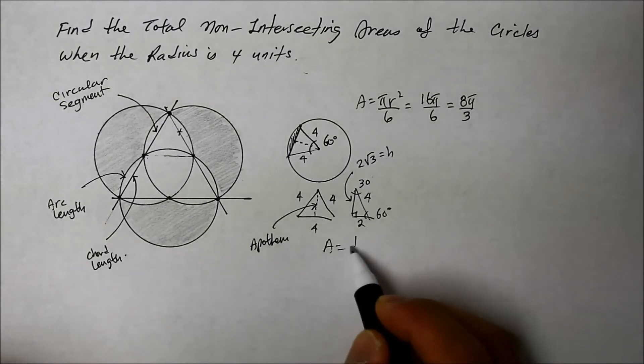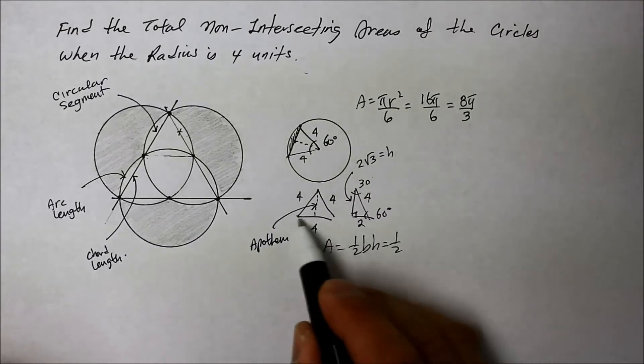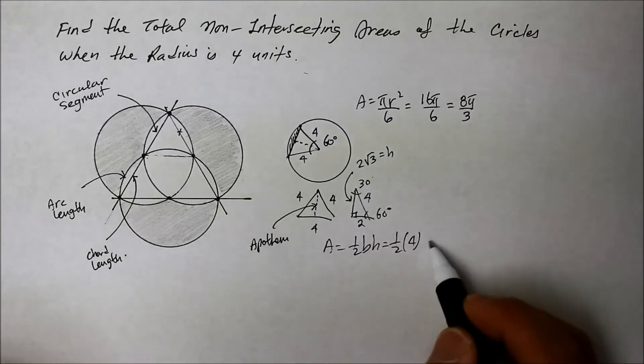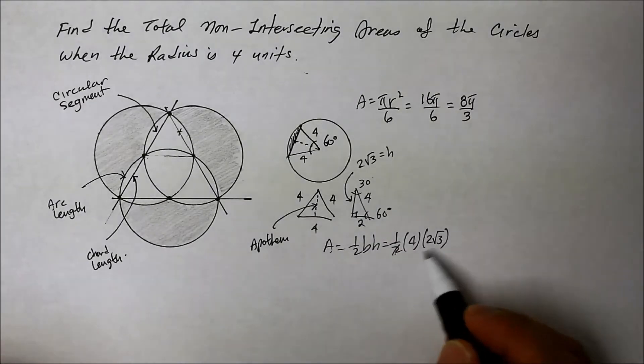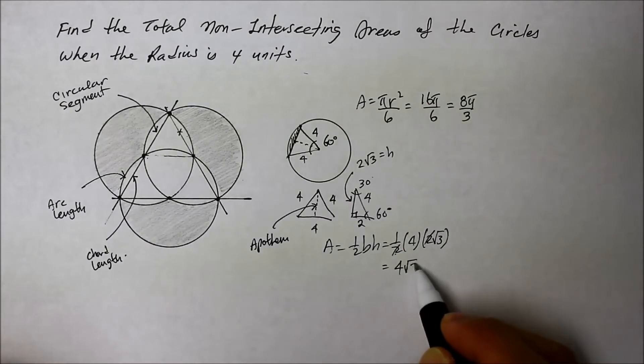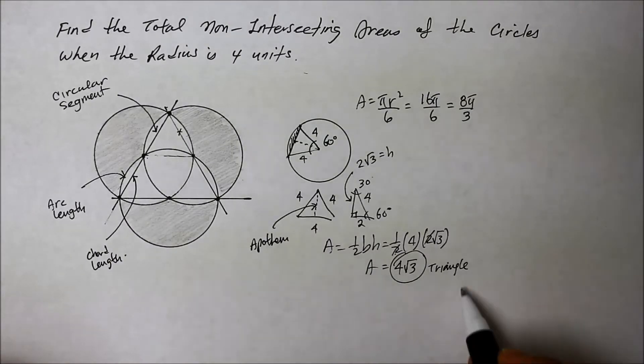And that becomes the height. So that the area is 1 half base times height of that equilateral triangle. So 1 half times base is the 4. And the height is the longer part of the leg, which is 2 square root of 3. 2 reduces that coefficient 2. Therefore, it is 4 square root of 3. That is the area of the triangle. One triangle.